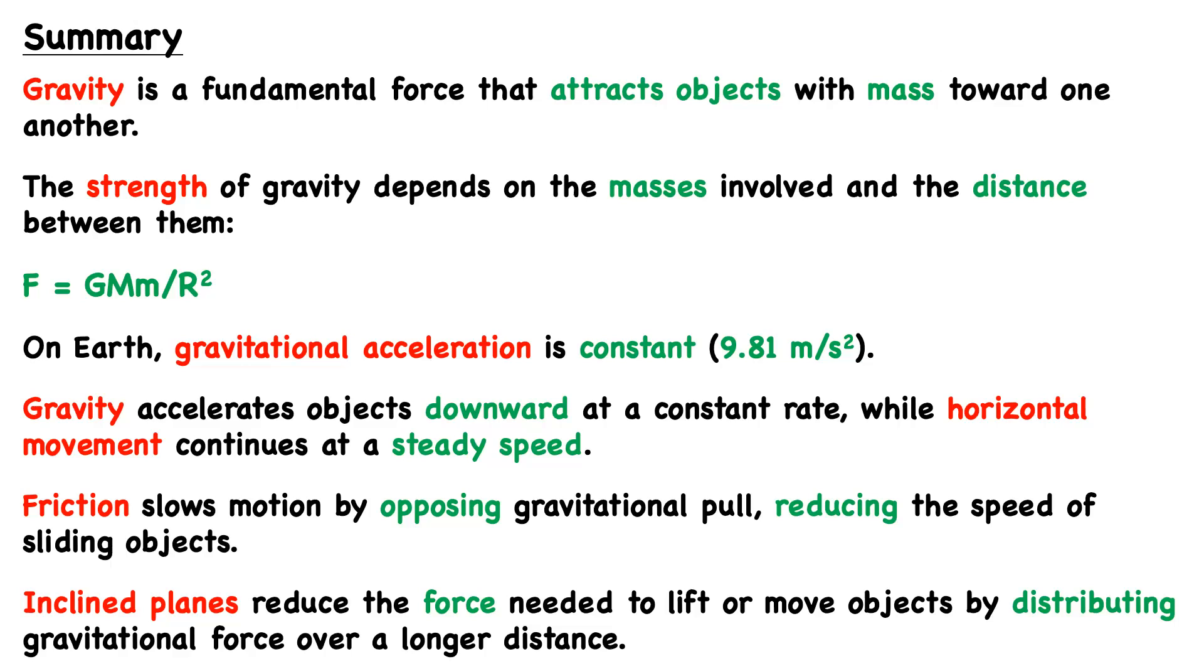Then we have some moderating elements, and the two that we talked about include friction, which slows motion by opposing gravitational pull, reducing the speed of sliding objects. Whereas inclined planes reduce the force needed to lift or move objects by distributing gravitational force over a longer distance.